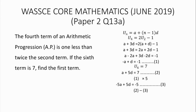Subtracting Equation 3 from Equation 2 gives us 6a equals 12, which implies a equals 2, by dividing both sides by 6. Therefore, the first term is 2.